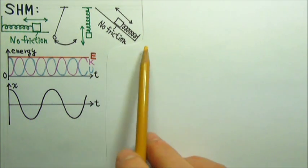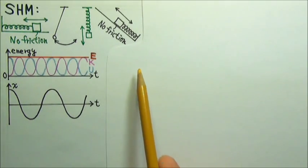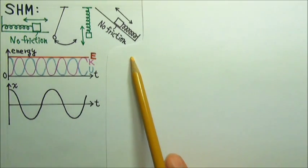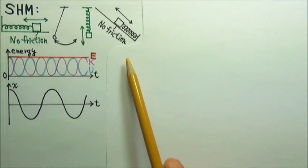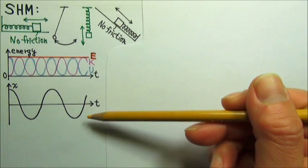So far, we have only discussed oscillations without any friction or air resistance. In those cases, an oscillation can go on and on forever, without any loss in mechanical energy or decrease in amplitude.